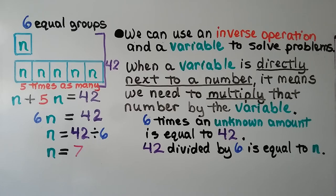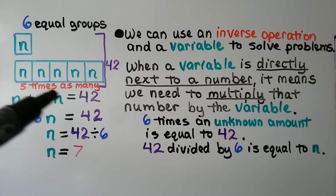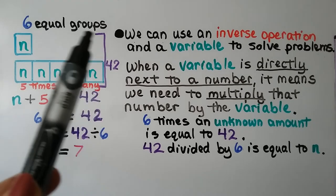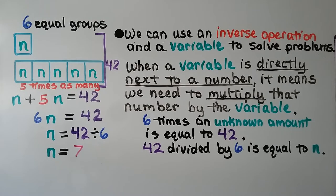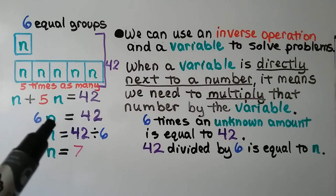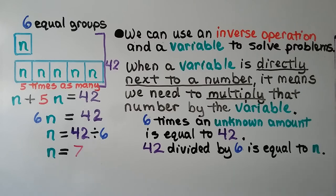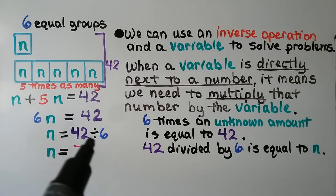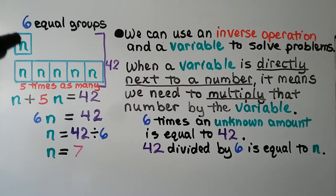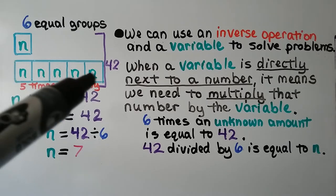We can use an inverse operation and a variable to solve problems. We say that this is n, so this is five n's. That means we have n plus five more n's, and we can see it's equal to 42 — there's a bracket with the 42 showing their total. When a variable is directly next to a number, it means we need to multiply that number by the variable. This is six times an unknown amount, and it's equal to 42. We use the inverse operation: 42 divided by 6 equals n. 42 divided by 6 is 7, so n equals 7. This one n is equal to 7, and five times 7 is 35.